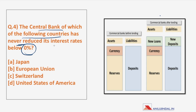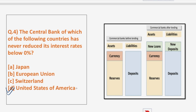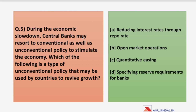The question asks which country has never introduced a negative interest rate. The Bank of Japan introduced negative interest rates in 2016. The European Central Bank introduced them in 2014 — currently at minus 0.5%, previously minus 0.4%, as shown in the graph. Switzerland also followed the ECB around 2014. Therefore, our answer is the United States of America, and Donald Trump is planning to move to negative interest rates.